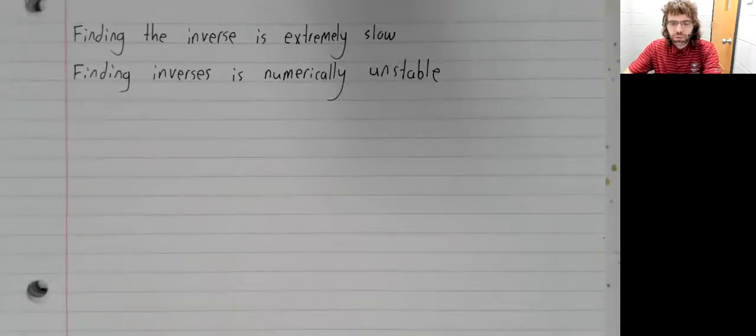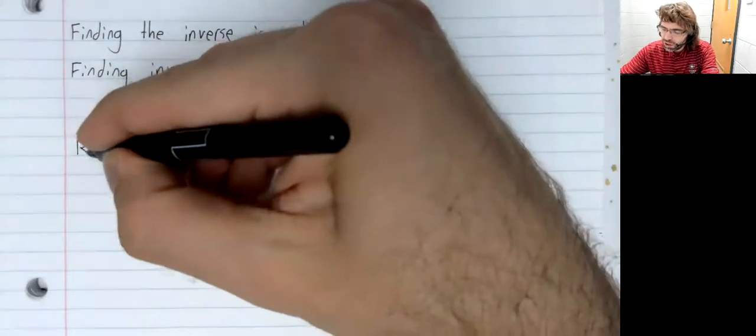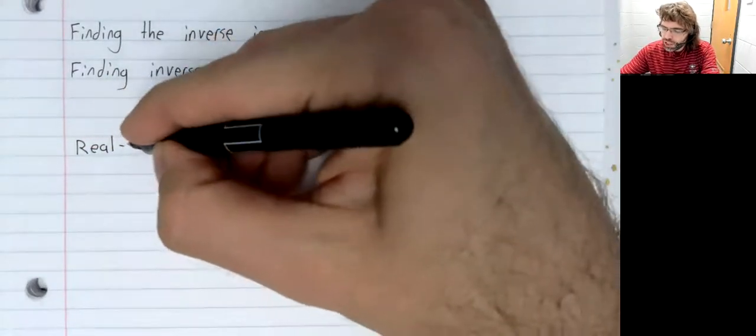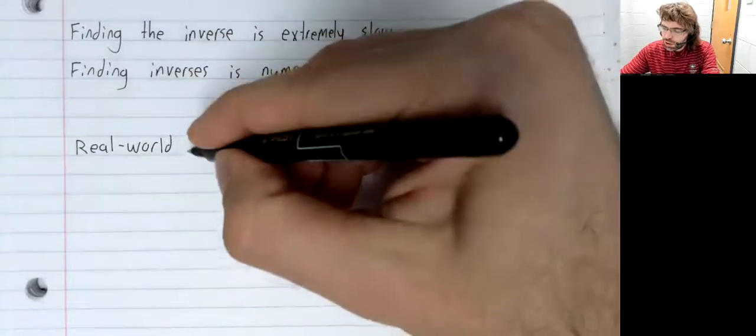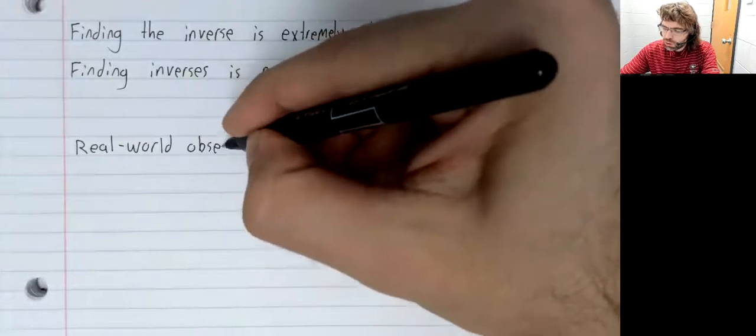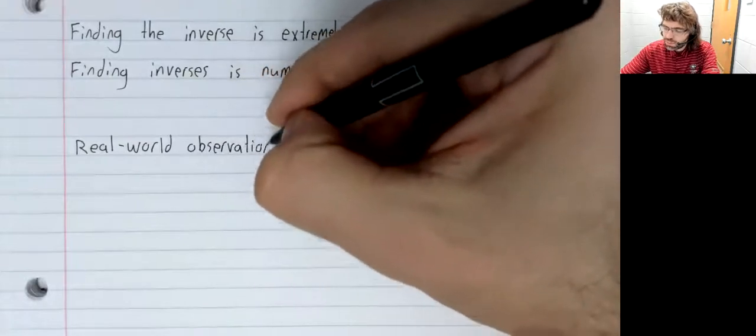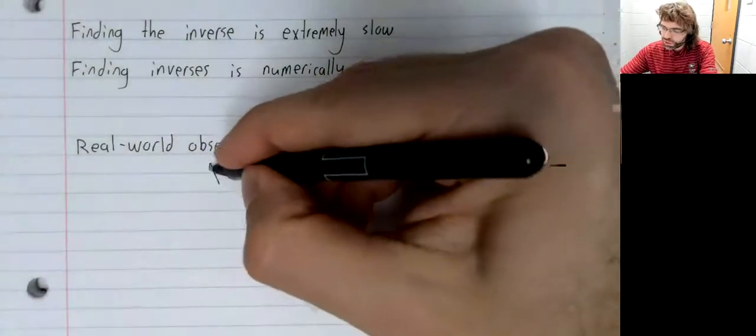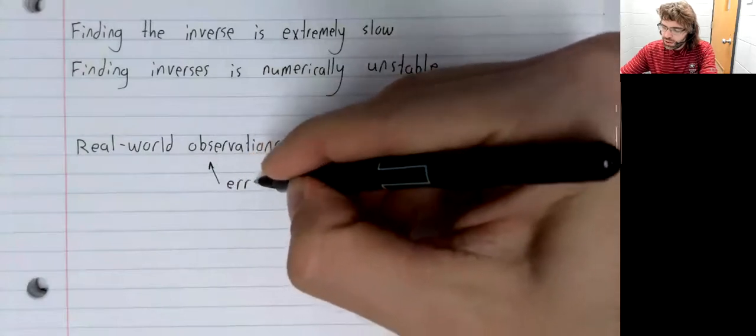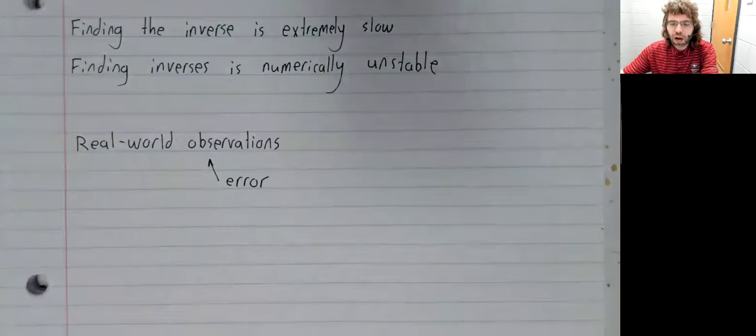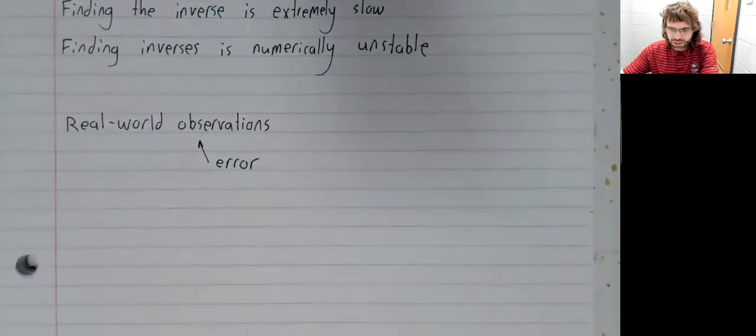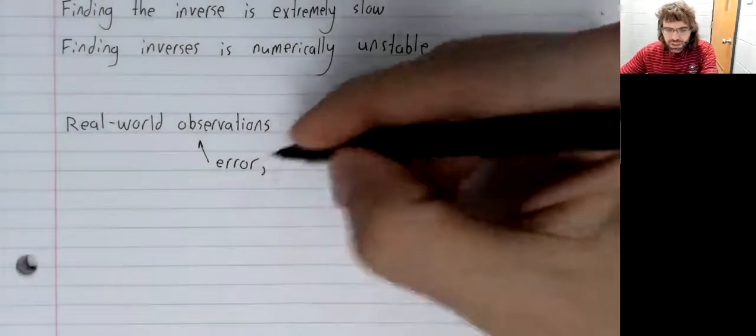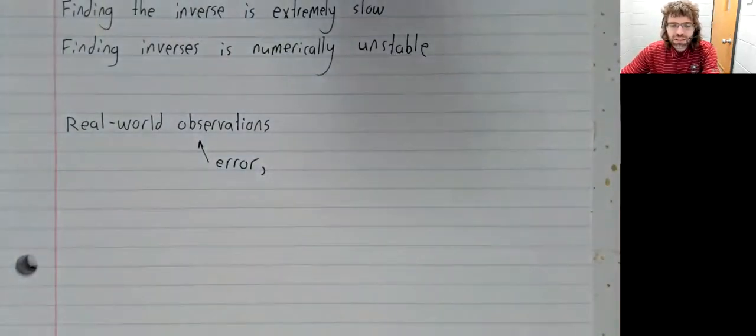Well, suppose you have a matrix. The matrix of real world observations. This matrix is going to include some errors in it. And the reason it's going to include errors is that most real world data is infinite decimals,